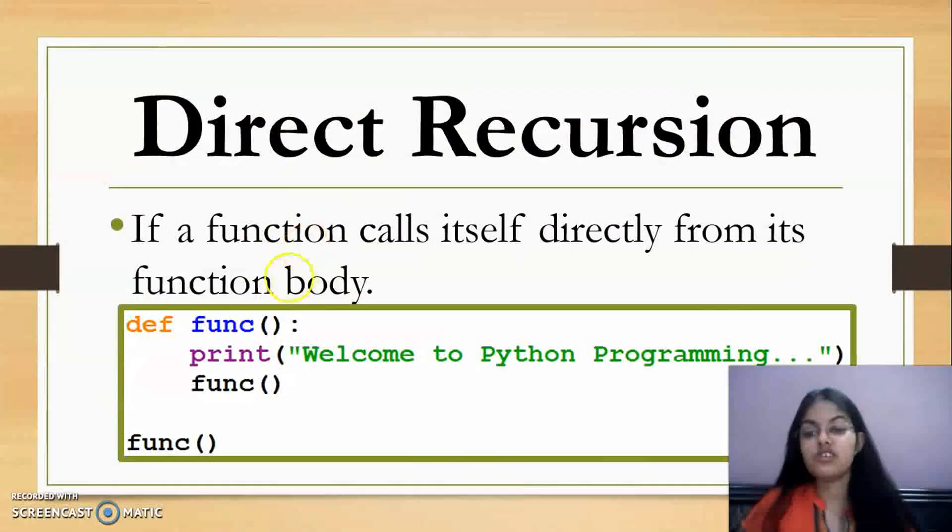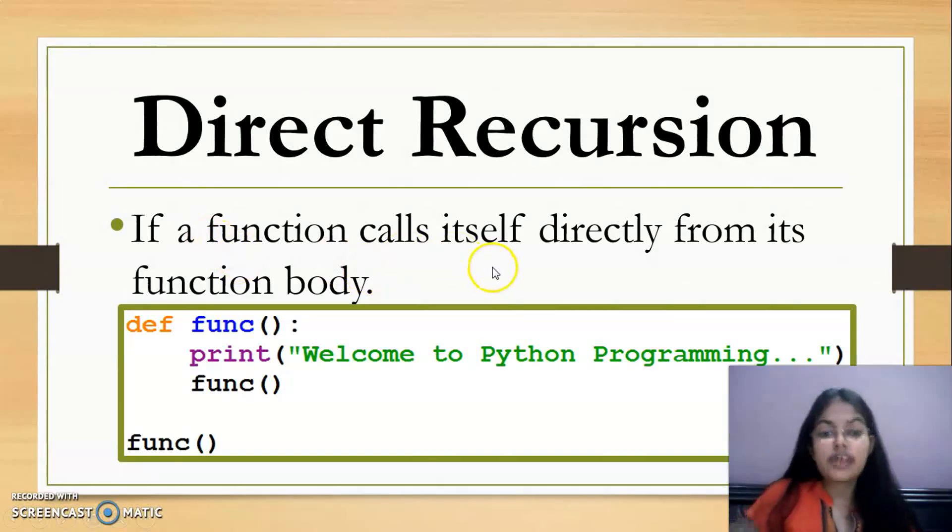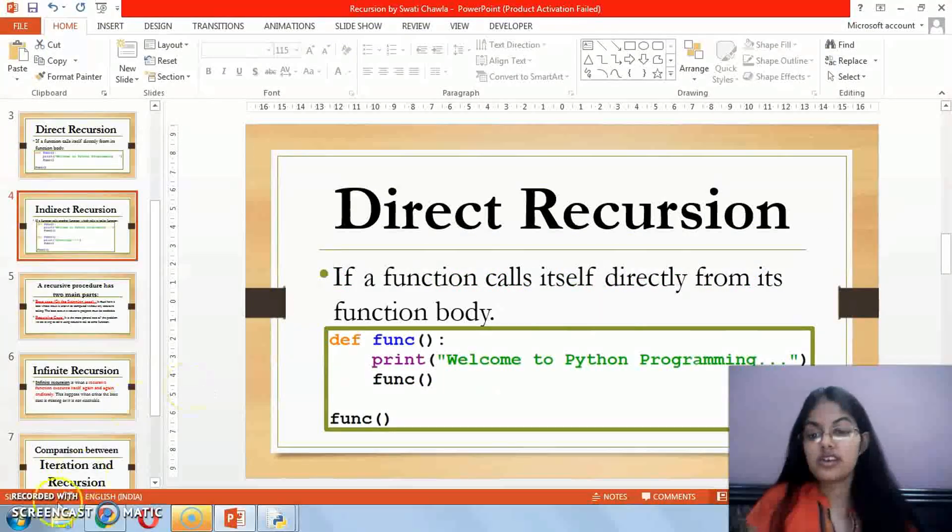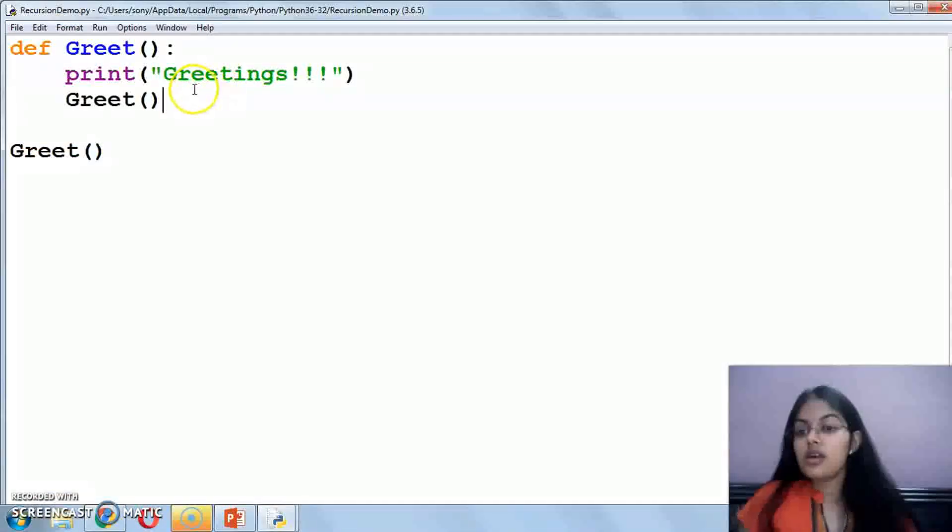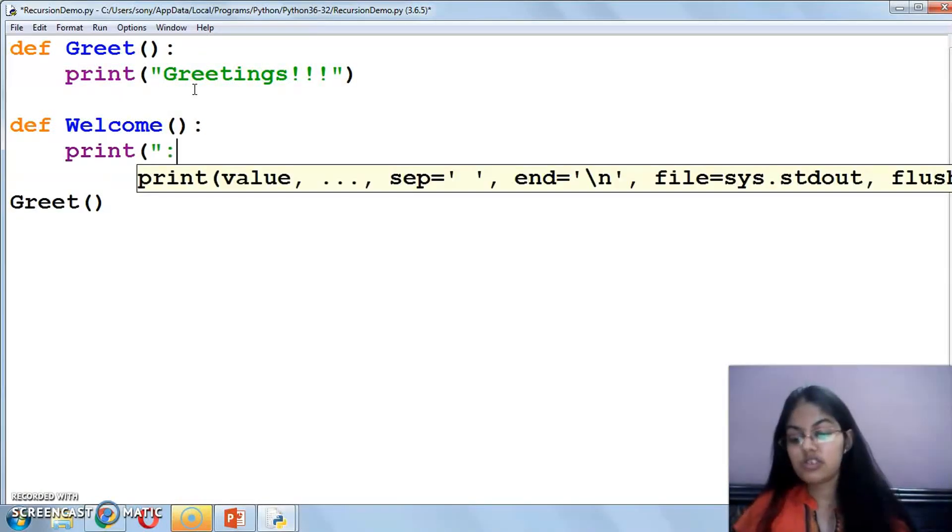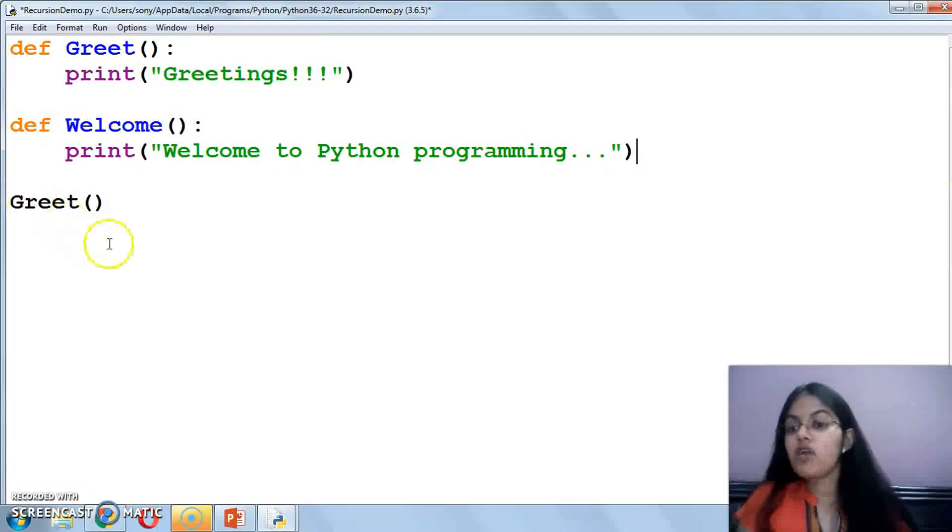Now see the definition. If a function calls itself directly from its function body, then that will be called direct recursion. Now the second type is indirect recursion. Let's see an example of indirect recursion. Suppose I am having two functions - first one is greet and second one is welcome. And here I am printing the message Welcome to Python programming. Now what will I do? I have called the greet function.